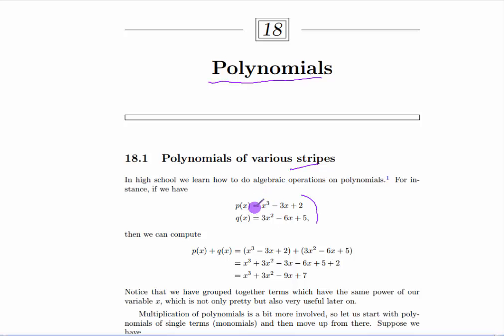So for instance here, p(x) has an x cubed term, no x squared term, an x term, and a constant term. Whereas q(x) has an x squared term, an x term, and a constant term.